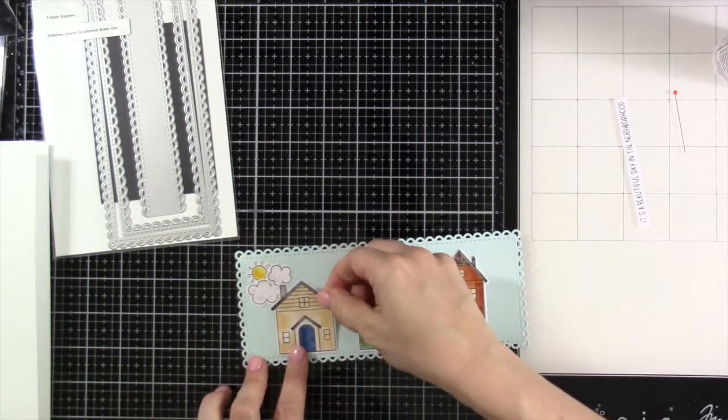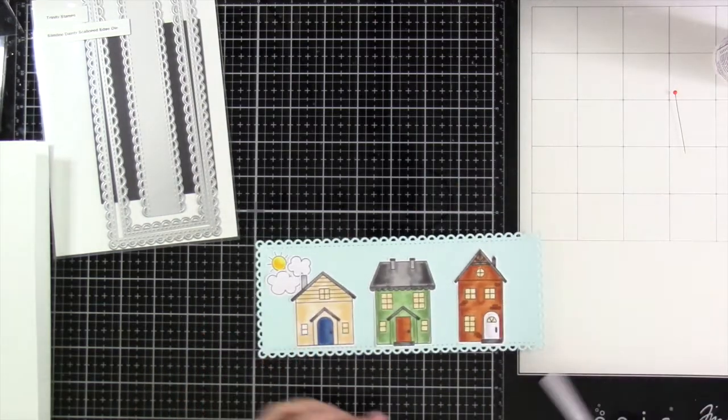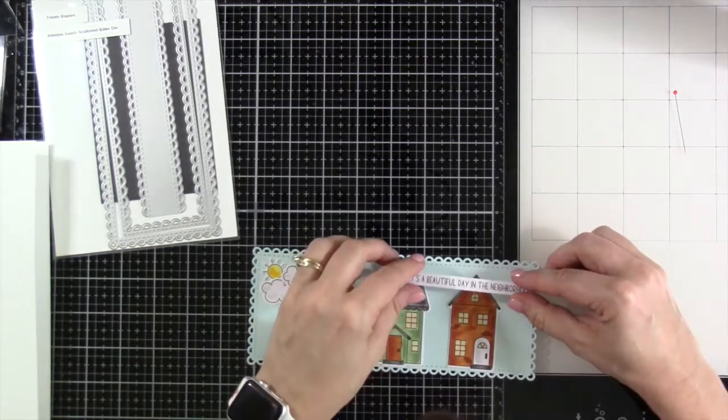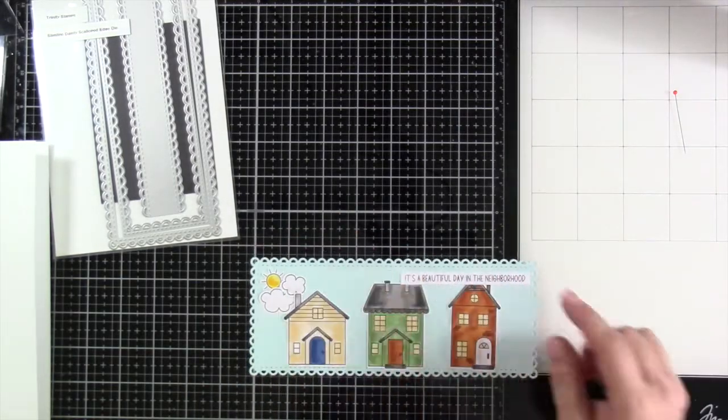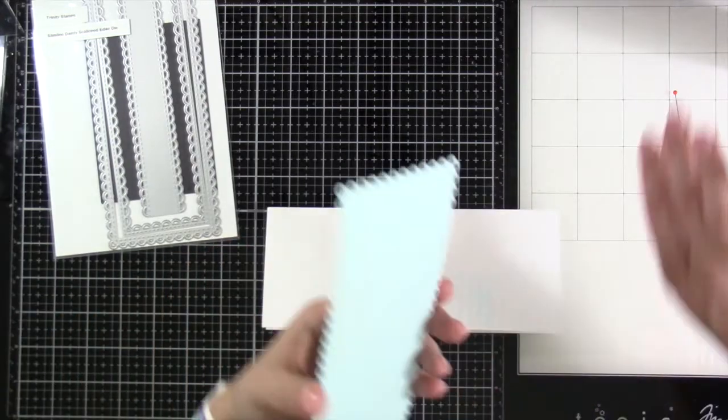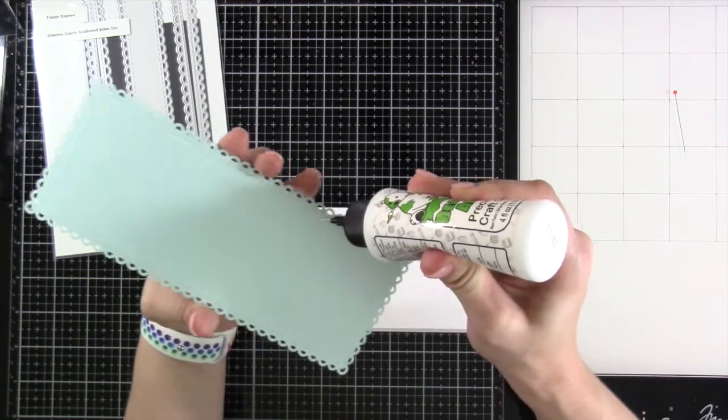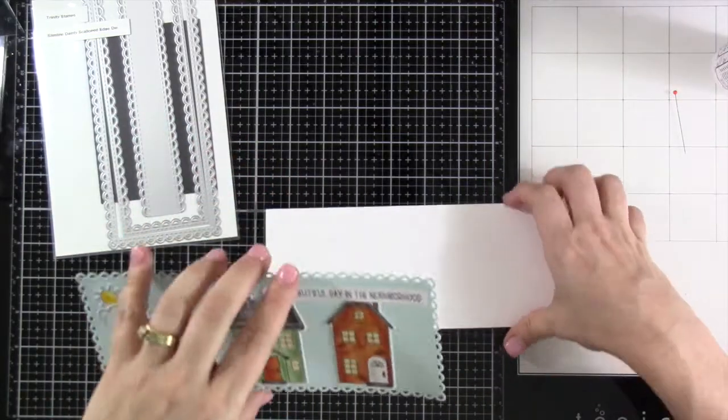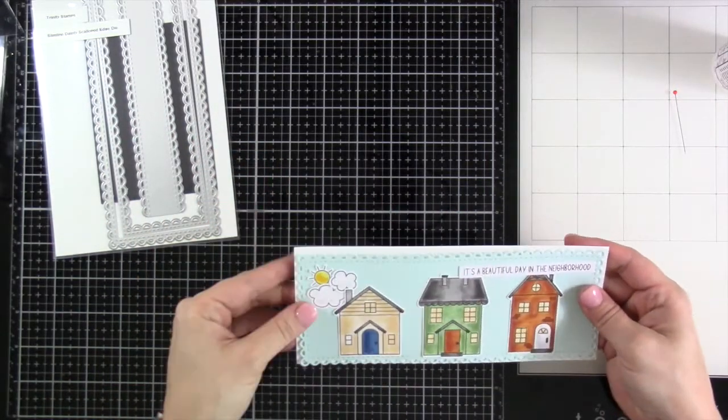So we'll attach down our others using some more liquid glue. We'll attach down our sentiment with some liquid glue. And then once the sentiment is on there, we're going to attach this down to a card base that is a Slimline card base. Closed, it measures three and a half inches by eight and a half inches, and this die fits perfectly on there and leaves a little bit of a white border.